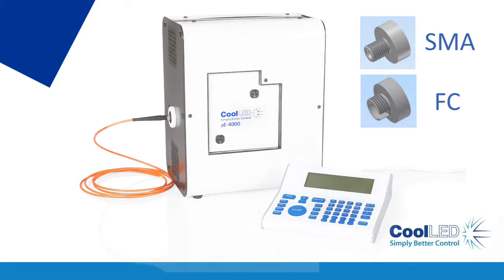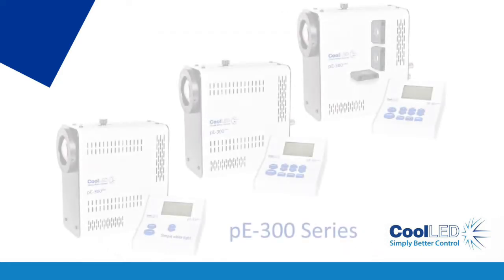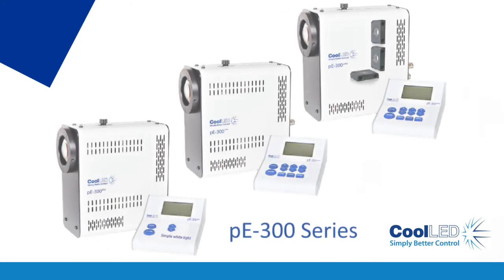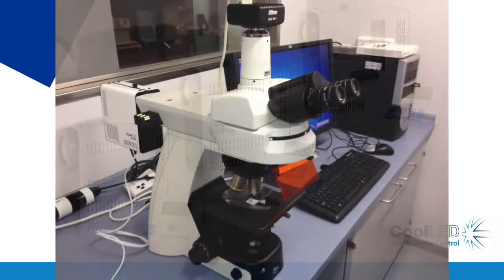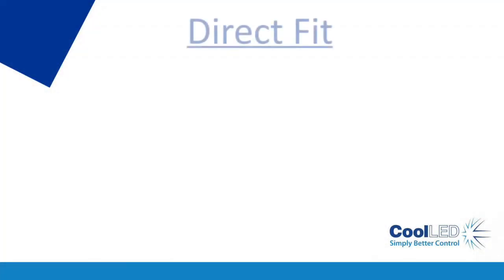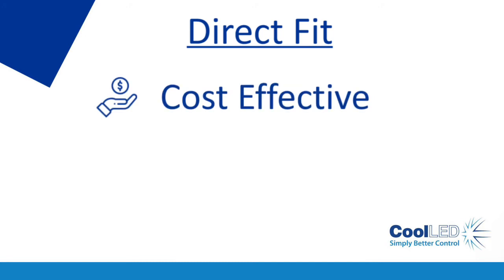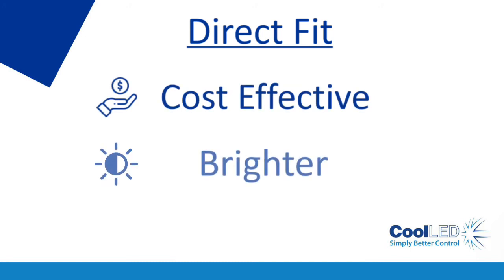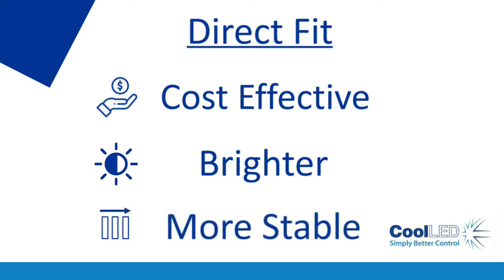As an alternative to liquid light guides, illumination systems such as the PE300 series are available in configurations which allow them to directly fit to a microscope. And this is great for three reasons: it's cheaper without the ongoing cost of a liquid light guide, illumination is brighter where light isn't lost during transmission, and irradiance also remains stable without the gradual degradation that inevitably happens to every liquid light guide.